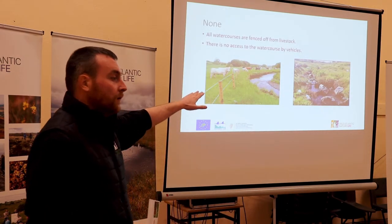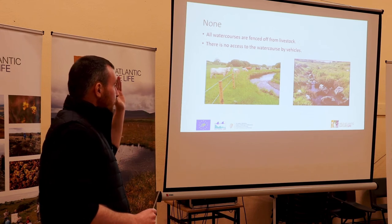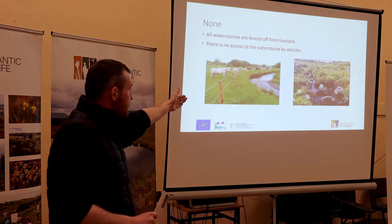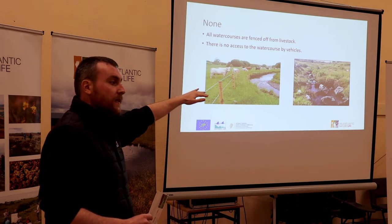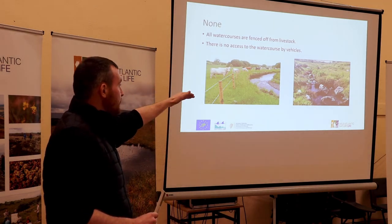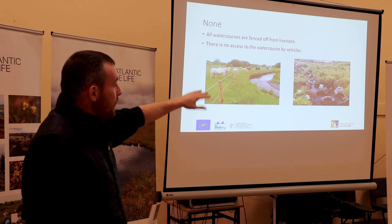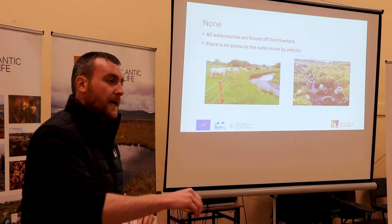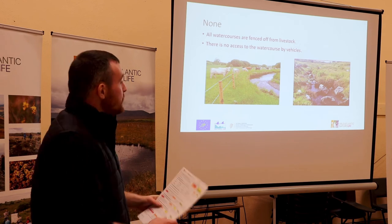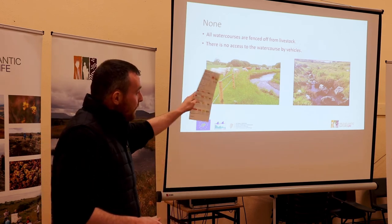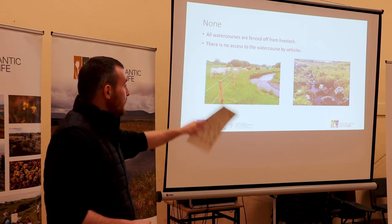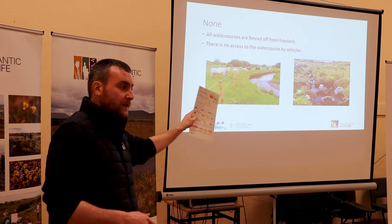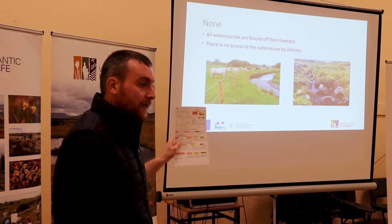An example of no damage is where someone has fenced all the way along the river, left a buffer zone, and animals have no access into that river. However, it doesn't have to be fenced - what we're looking for is actual damage, not potential damage. If we come out and see no visible damage occurring to the watercourse, there's no issue. It's only where we come along and see actual damage that the issue occurs.